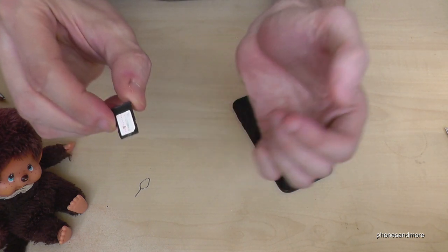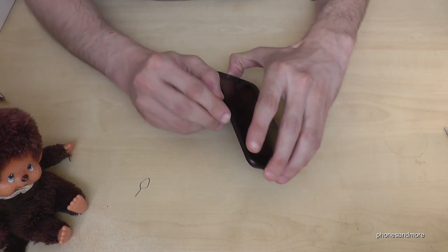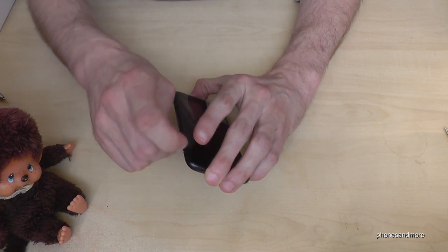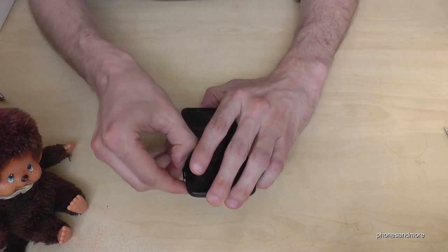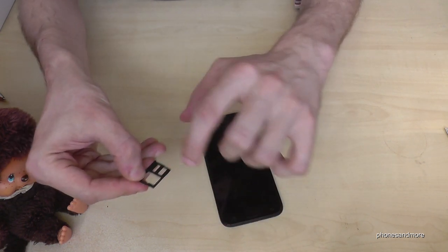So you would insert it like this if you have a single SIM version or a dual SIM version. And in case you have the dual SIM version, you could enter the second nano SIM card in here where the slot is.